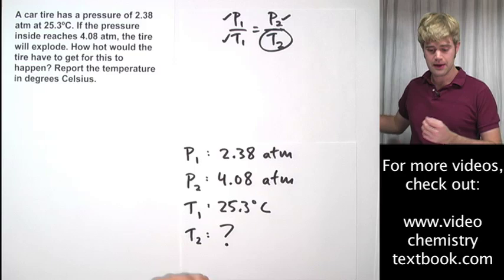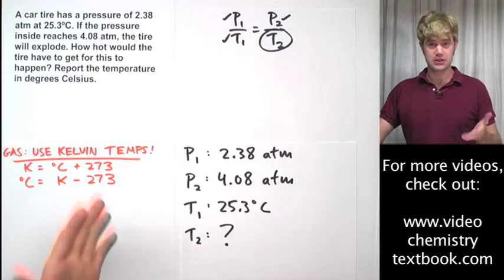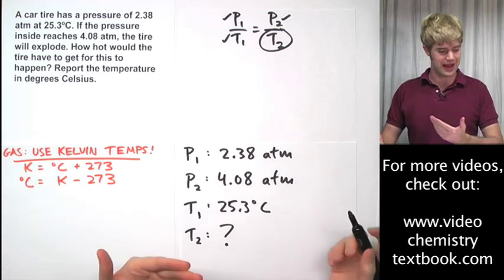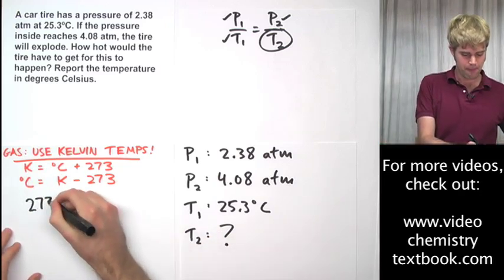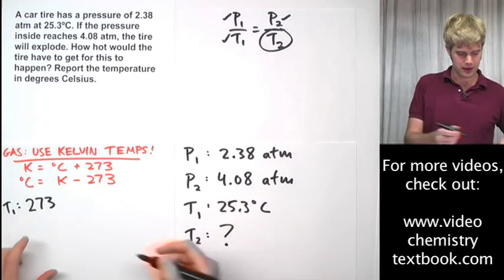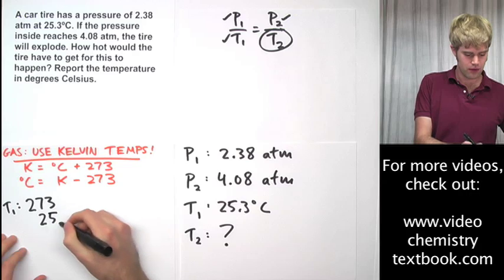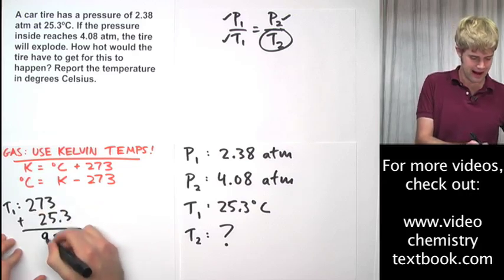Now again, let's convert our Celsius temperature here that's T1, let's convert it into Kelvin temperature so that we can use it for gases. Again, we take 273, this is T1, we take 273 and we're going to add 25.3 to this.